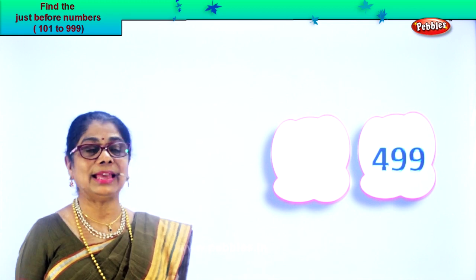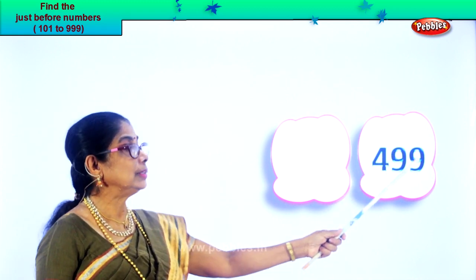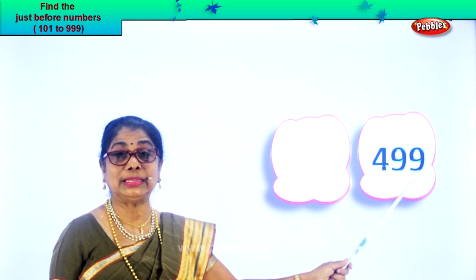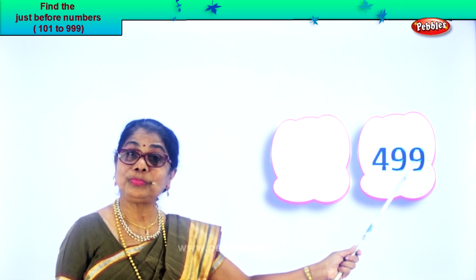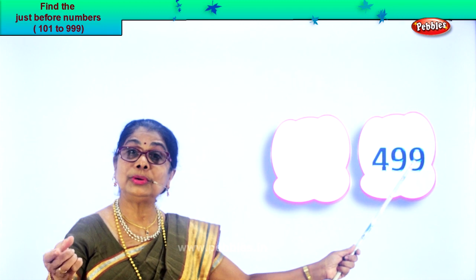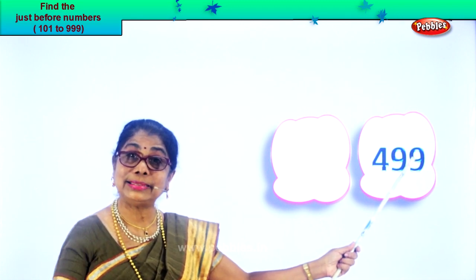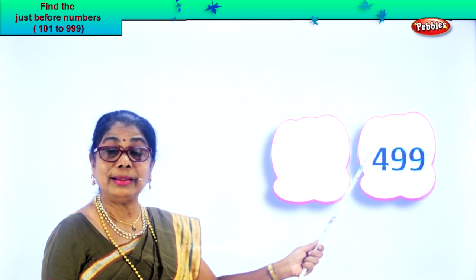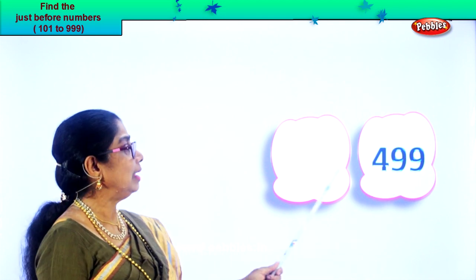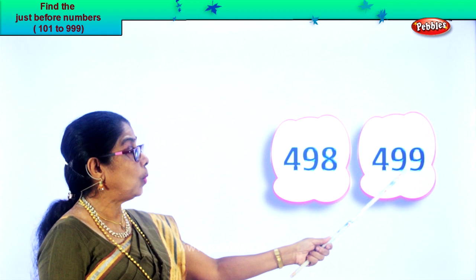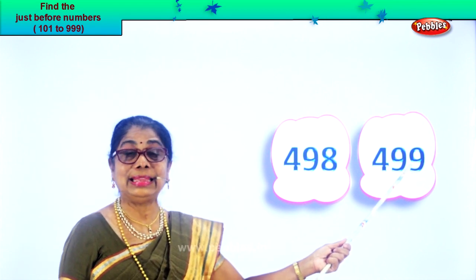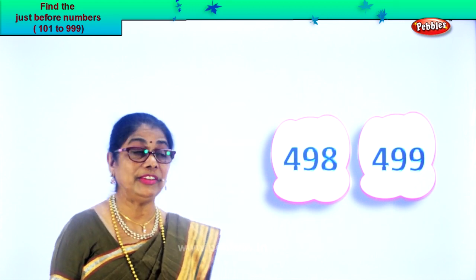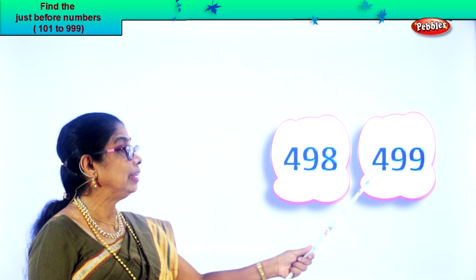Now this is hundreds, tens, ones. What number is in the ones place? Nine. One less than nine is eight. So the number before is 498. One less than 99 is 98. So we have 498, 499.